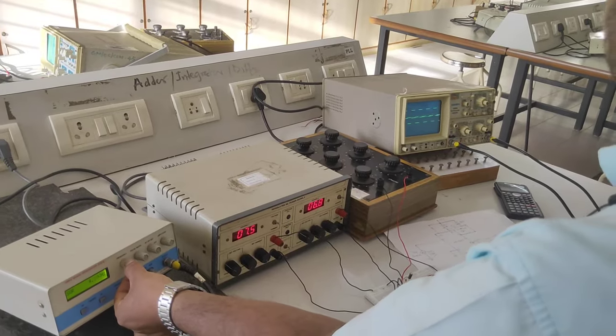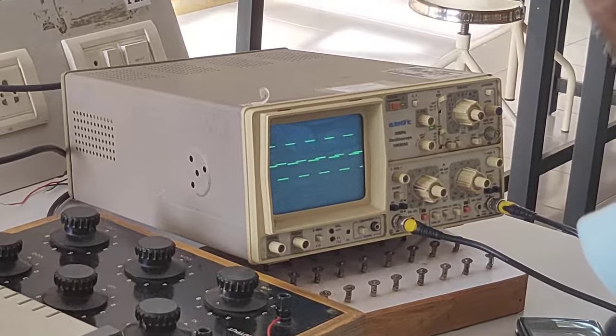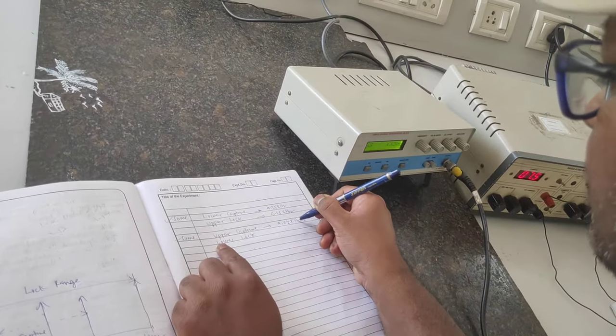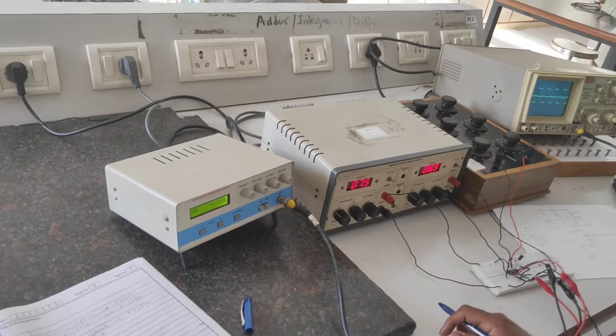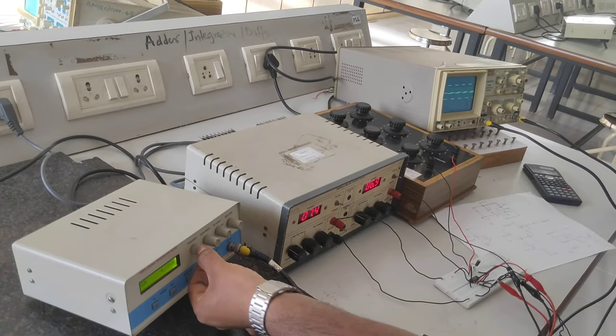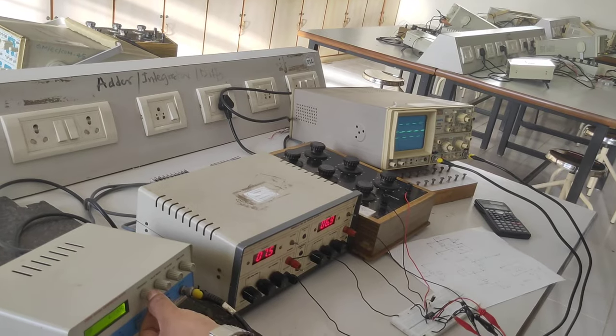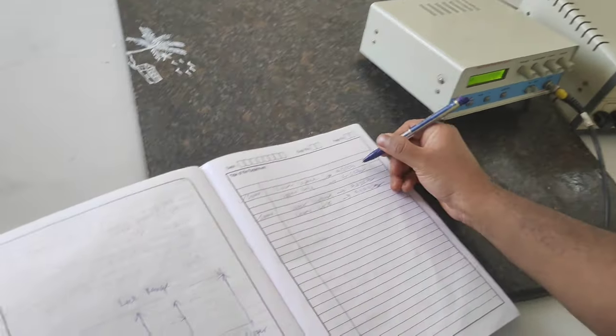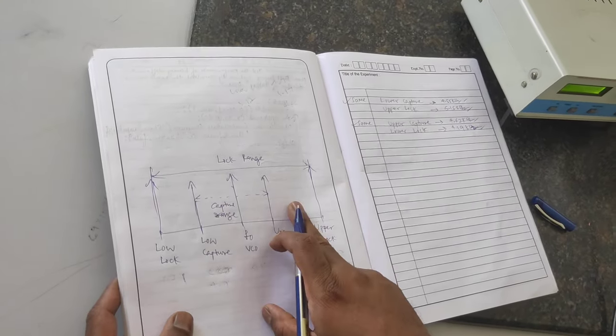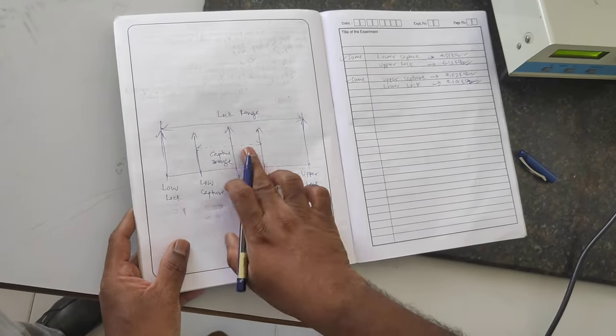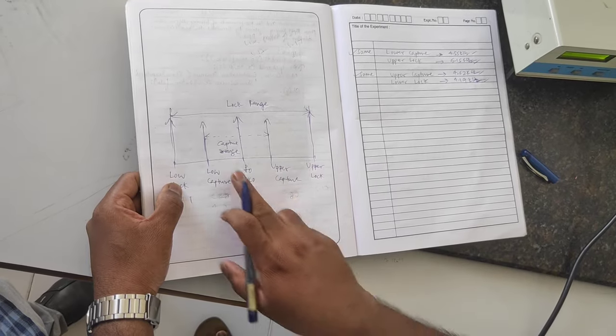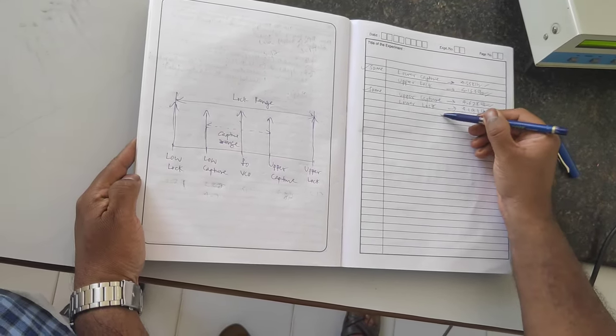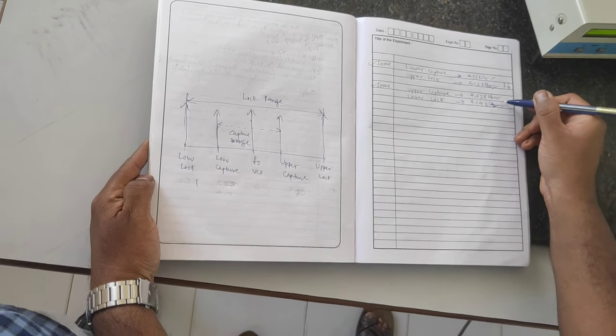So this is called lower lock. You substitute all these four frequencies in this axis, you can get the difference between this lower capture and upper capture will give capture range, difference between upper lock and lower lock will give lock range. Capture range and lock range you can easily calculate with the help of this graph. So I have written lower capture, upper lock, upper capture, lower lock. First time you will go on increasing the frequency. Next time you will go on decrease the frequency.